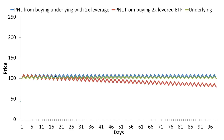We're going to go back to one of our original plots where we assumed that the underlying was moving up and then moving down and up and down and so on. As you can see in the graph, holding the levered ETF under this scenario causes you to underperform levering up the underlying on your own, which can be seen by the red line underperforming the blue line. We're going to look at how this degree of underperformance changes as we go from a 2-to-1 levered ETF to maybe a 3-to-1 levered ETF.